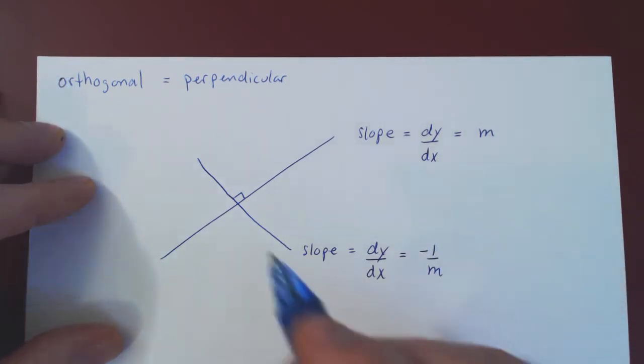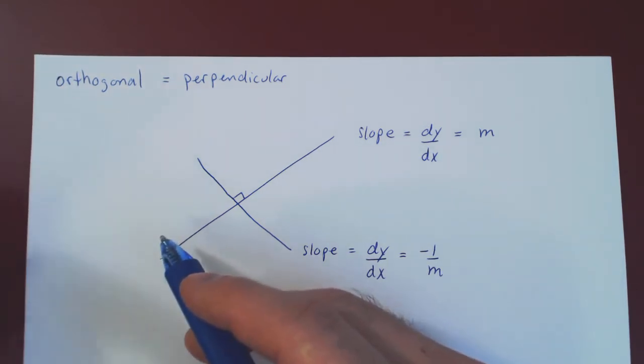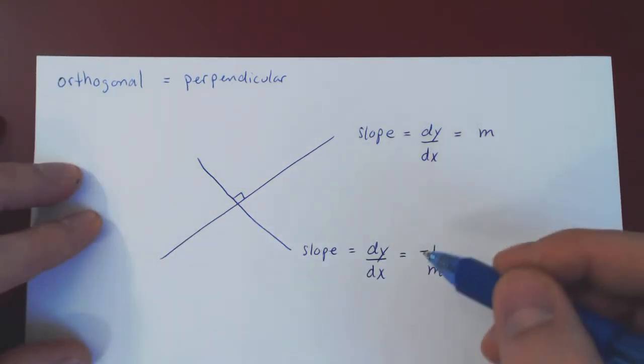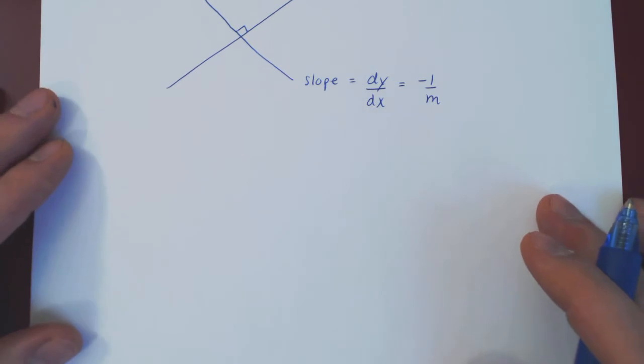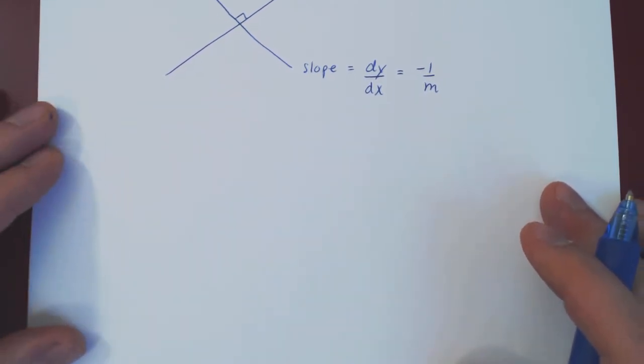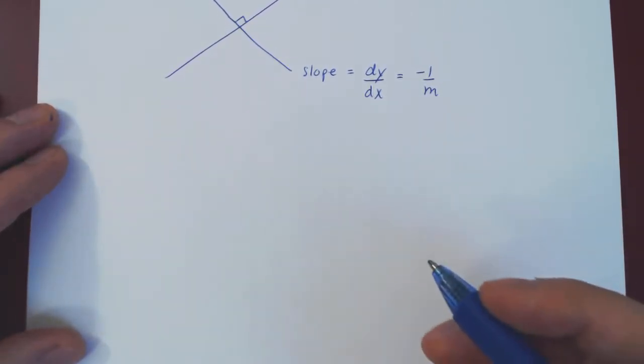And that's it. Now the idea is, how can we use this fact about lines being perpendicular to curves being perpendicular? Well, if you think about it, it's a very natural extension. Consider the following picture.